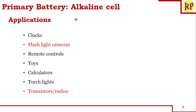Wherever we use a dry cell, we can use an alkaline cell instead. Applications include clocks, remote controls, small toys, calculators, torch lights, transistors, radios, and flashlight cameras — though some of these devices are now outdated. Alkaline cells were commonly used in all of these in place of dry cells.